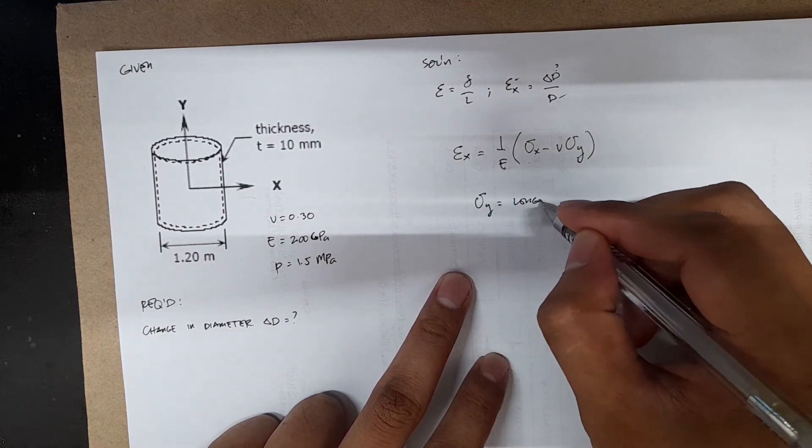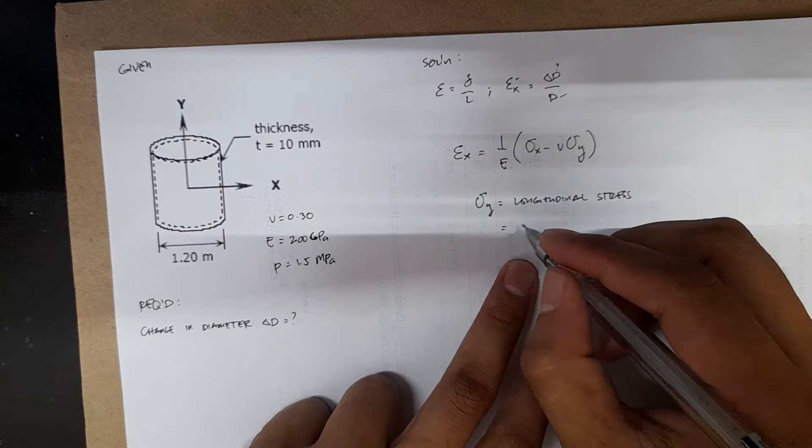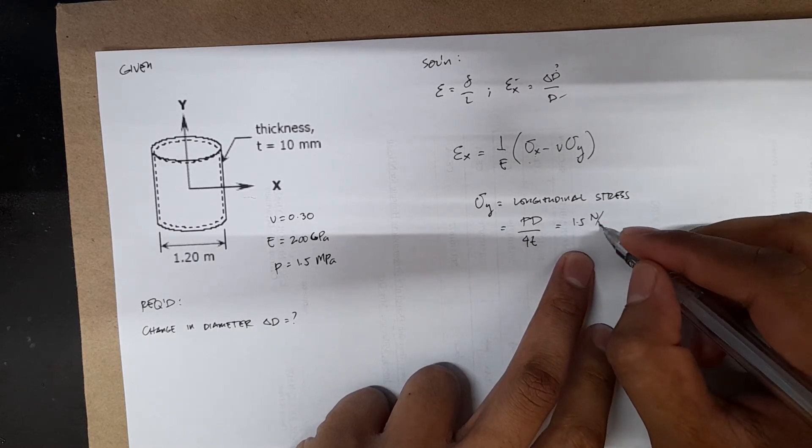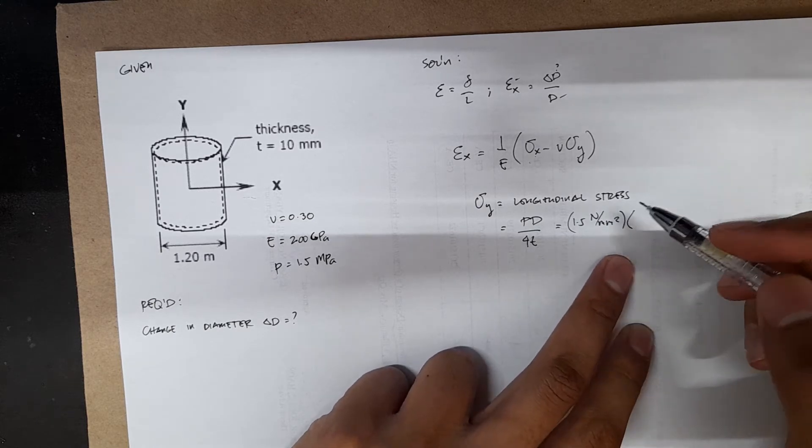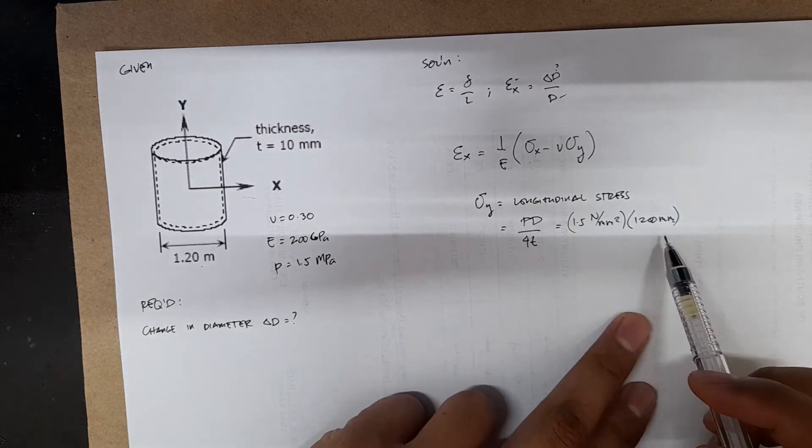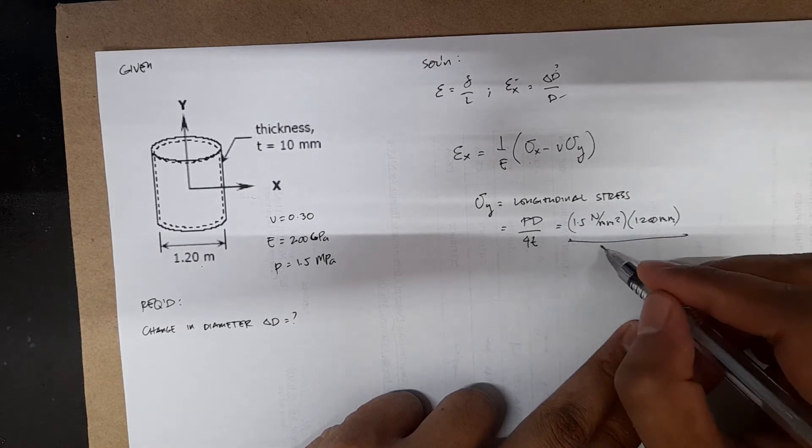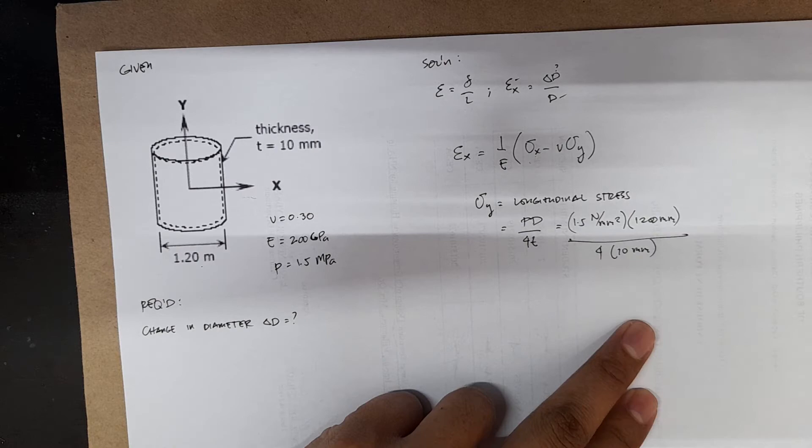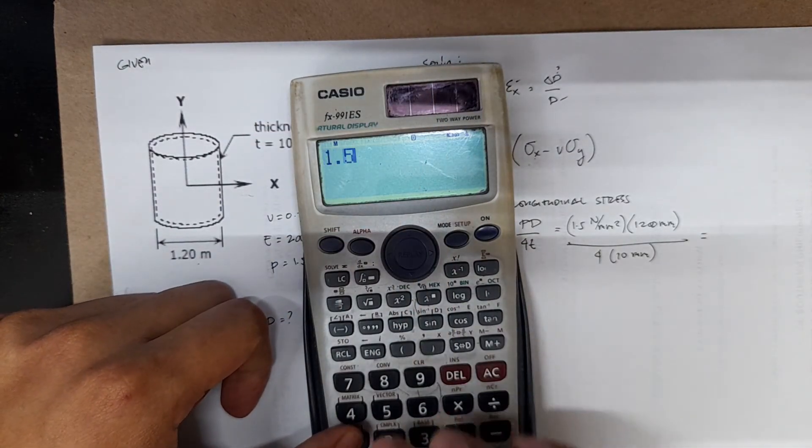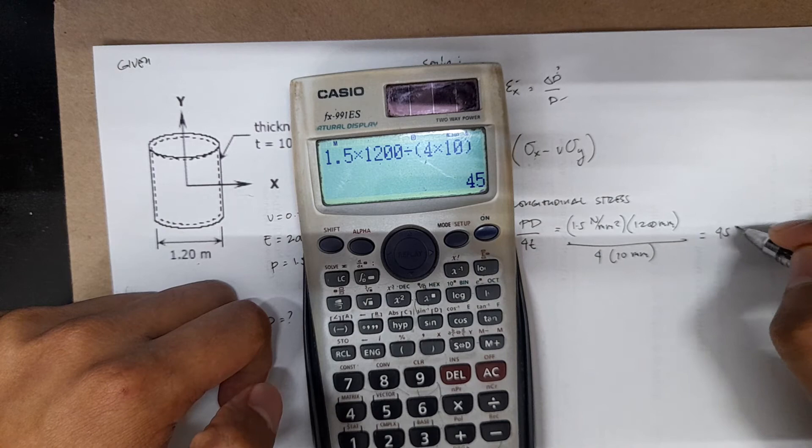X is your tangential because it's along this direction, and y is your longitudinal stress. Stress y equals longitudinal stress, which is equal to pd over 4t. You have the 1.5 newton per mm square, you have the d or diameter which is 1.2 meters or that's 1200 millimeters. Notice that I converted the 1.2 meters to 1200 millimeters. Then you have 4 times thickness which is 10 mm. You will have stress y equals, so let's evaluate this. You have 1.5 times 1200 divided by 4 times 10. It's 45 megapascals.